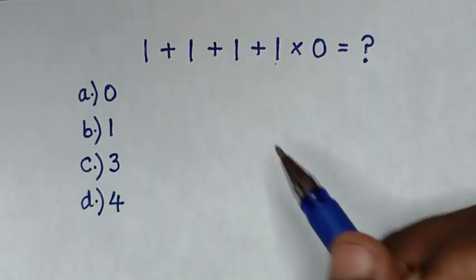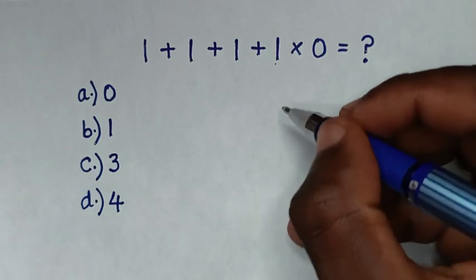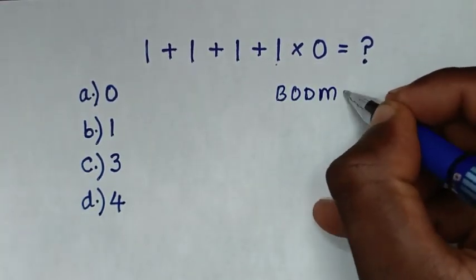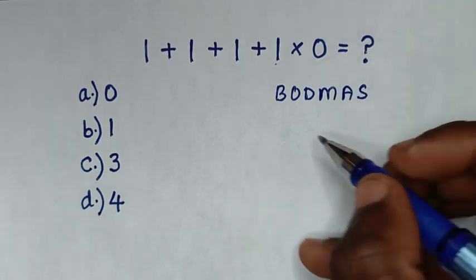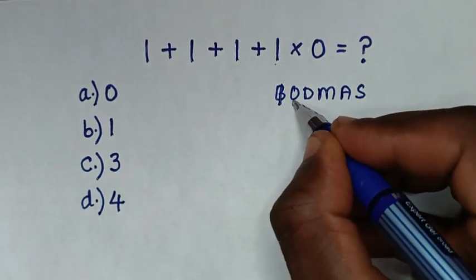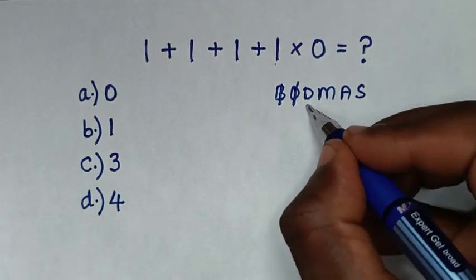From this math problem, let's solve it by using BODMAS rule. So from the rule which is BODMAS, whereas B is bracket, we don't have bracket, also we don't have order or exponents, we don't have division,